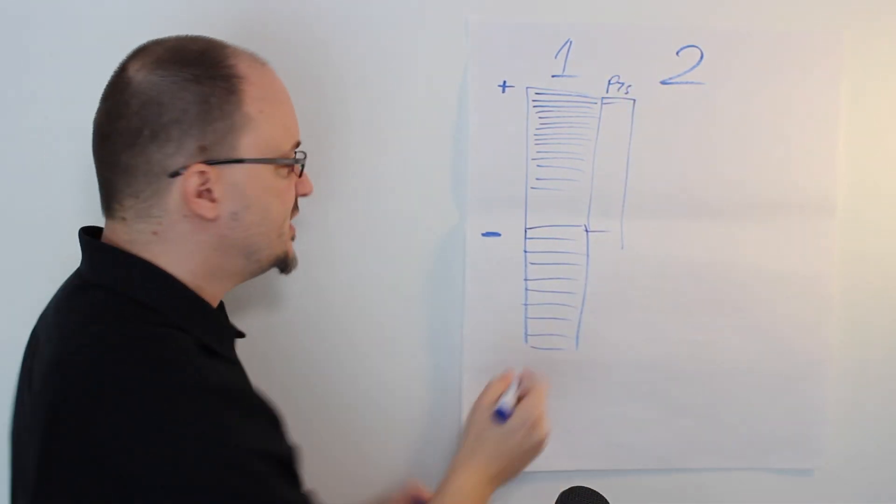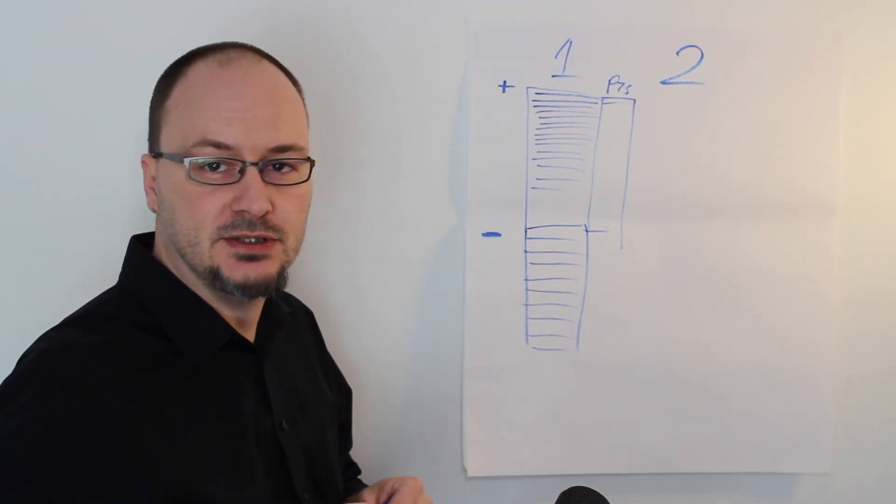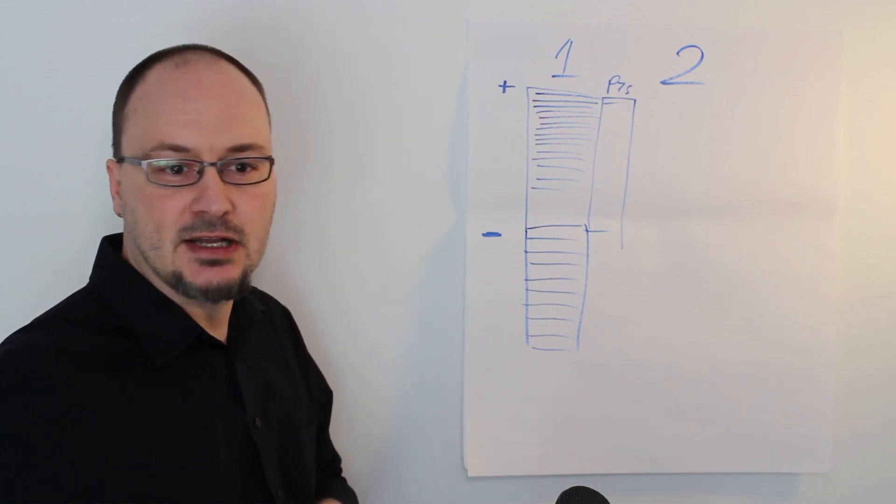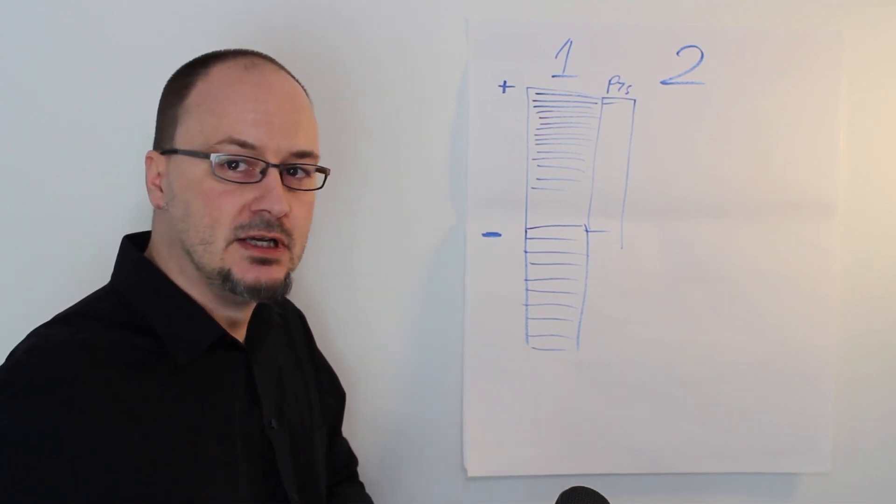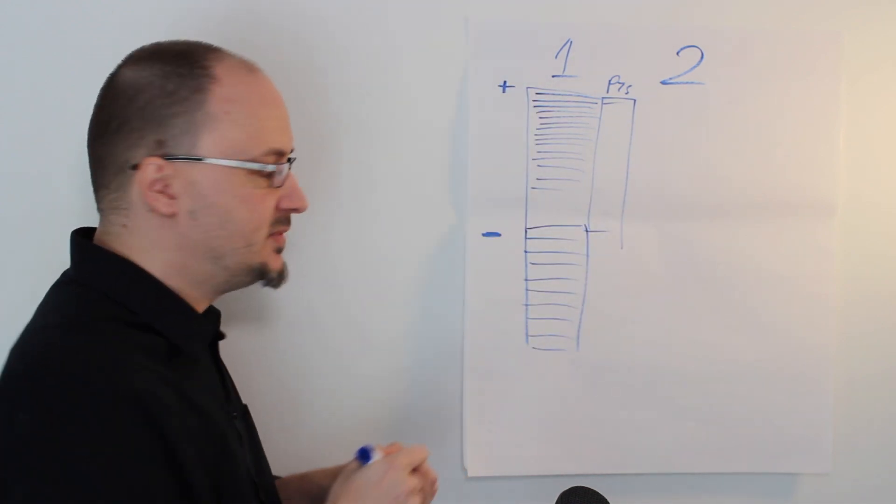And what you do is you start at the bottom and you're going to start what I call distributing the points. So it's not an estimation like you see in any other kind of agile estimation. You're going to distribute the points up the scale.